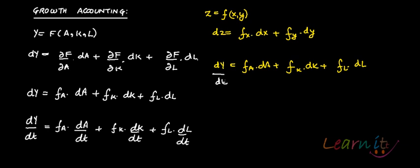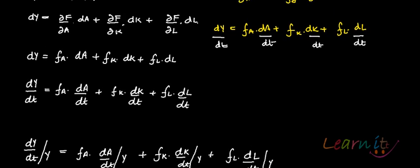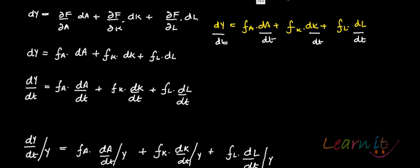To find growth rates, divide both sides by dt. Then, to find the growth in Y, divide all terms by Y as well.